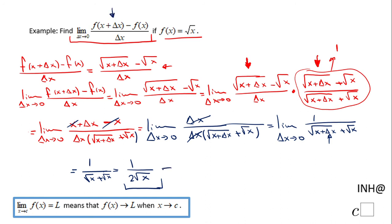So this limit is nothing else than one over two square root of x — an expression in terms of x. If you enjoyed this video clip, don't forget to click the like button and come back to C square for more help.